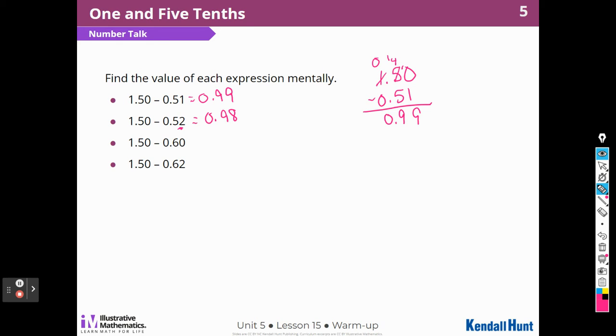For this one, I'm taking away a lot more. So, 1 and 50 hundredths minus 60 hundredths. Well, I know that's going to be 0, and then I'm going to have to borrow 1 from this, or I can think of this as 15, and just make sure I have a decimal point here, right? 15 minus 6 is 9. So, I think this is 90 hundredths, or 9 tenths. You could write it either way. And then I'm just taking 2 more away from that, aren't I? So, 2 less than 90 would be 88 hundredths.